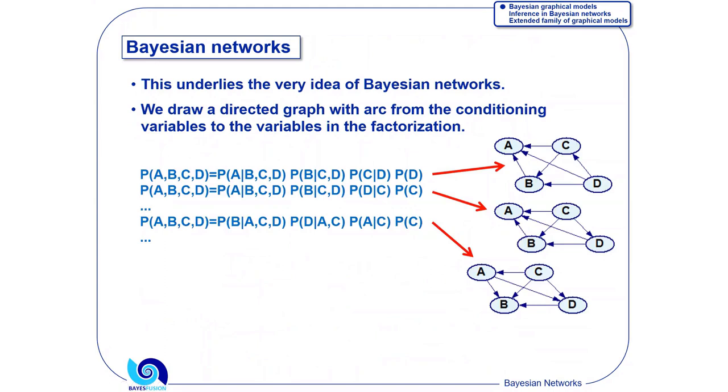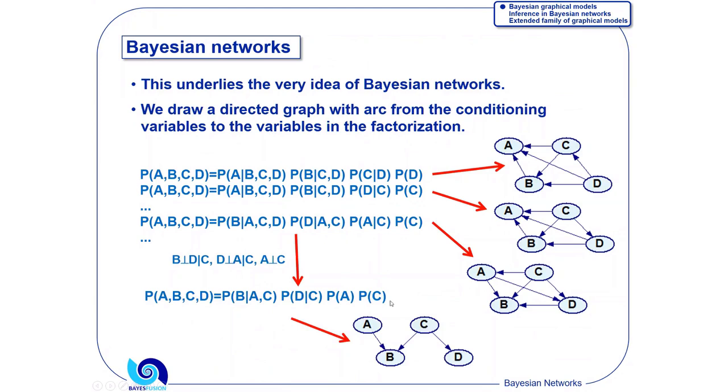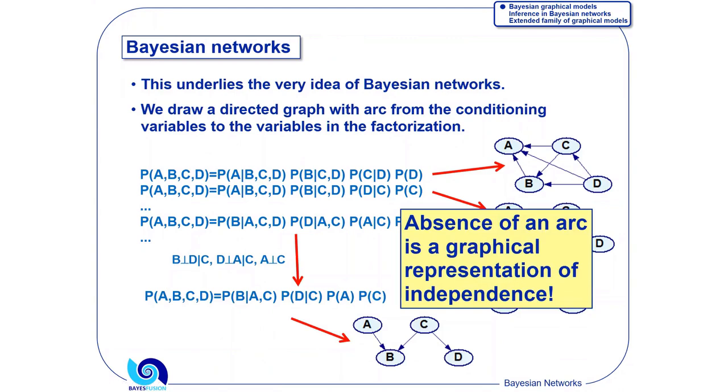The acyclicity comes from the fact that in this factorization, you will never have a situation that you have, let's say, D here, and then you are conditioning on D. Some factorizations can be simplified. The graph drawn from this factorization is simpler. Absence of an arc is a graphical representation of independence. But also, it reduces the number of parameters that I need to represent my joint distribution.